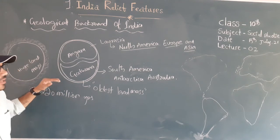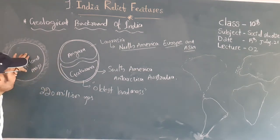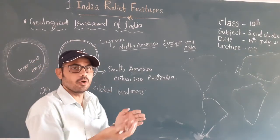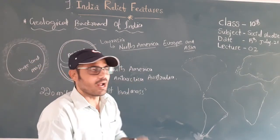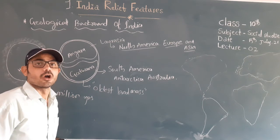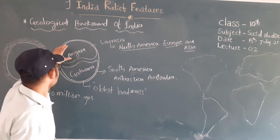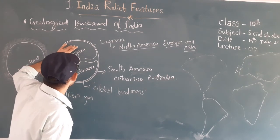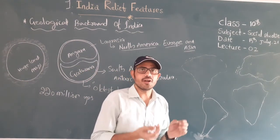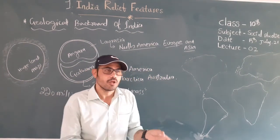After that, Pangaea split into two sides — two landmasses. One is Angara, and the other one is Gondwana landmass. After the continental drift theory proposed by Alfred Wegener, this splitting and movement was explained.